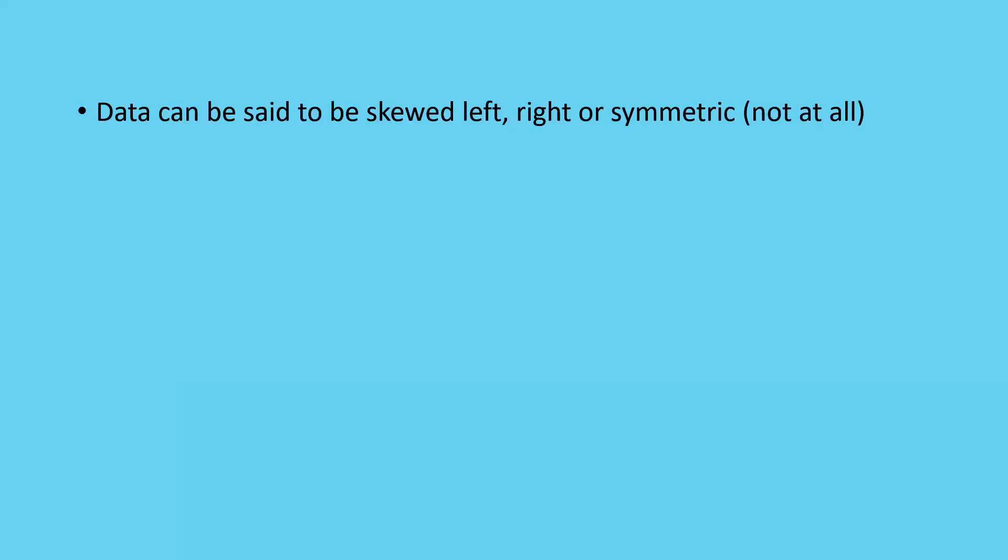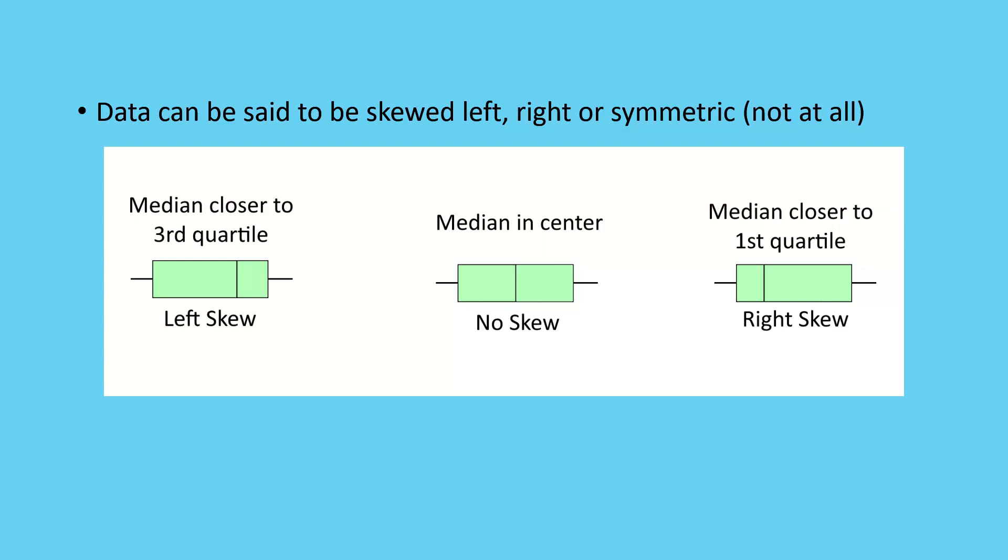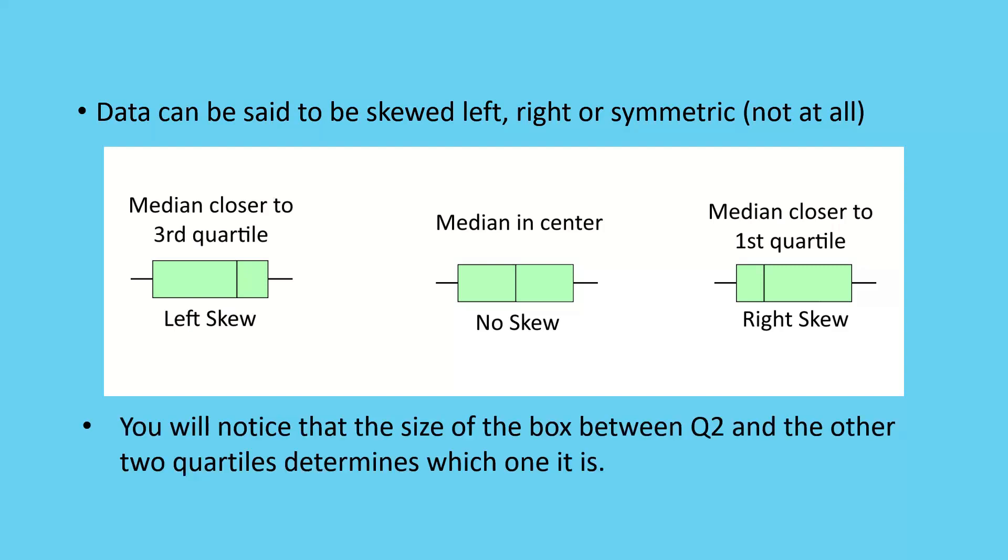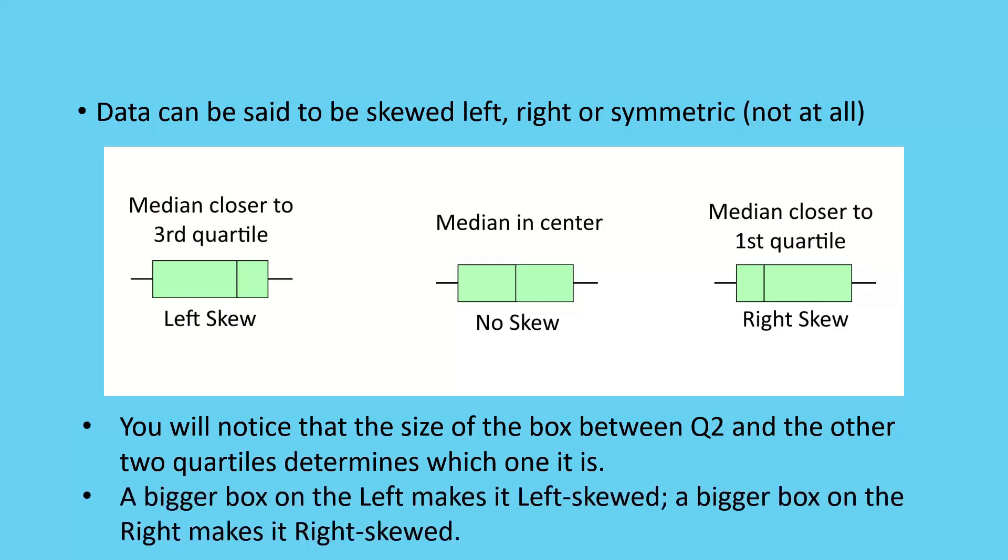We can also say that our data is skewed to the left, the right, or symmetrical. Symmetrical data in a mathematical point of view means that it would match a bell curve - it's perfectly distributed, it's exactly what you would expect in perfect situations. If our median is closer to the third quartile, it's skewed to the left. If the median is dead center, then we know that it's not skewed. And if the median is closer to the first quartile, it's said to be skewed right. You'll notice that the size of the box between Q2 and the other two quartiles determines which one this is. The bigger box on the left makes it left skewed, the bigger box on the right makes it right skewed.